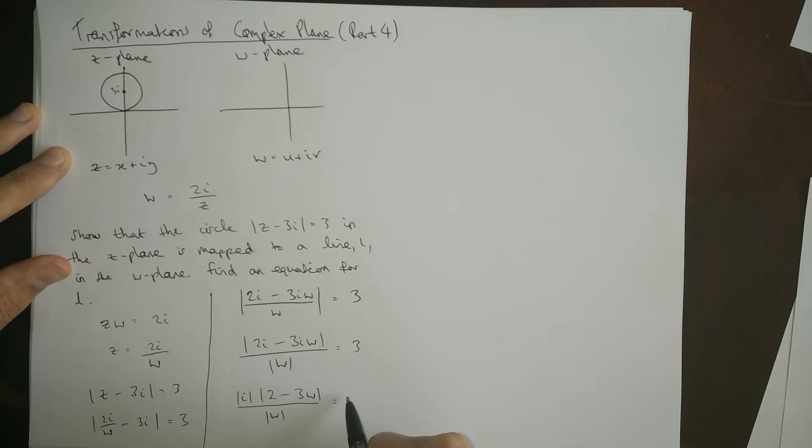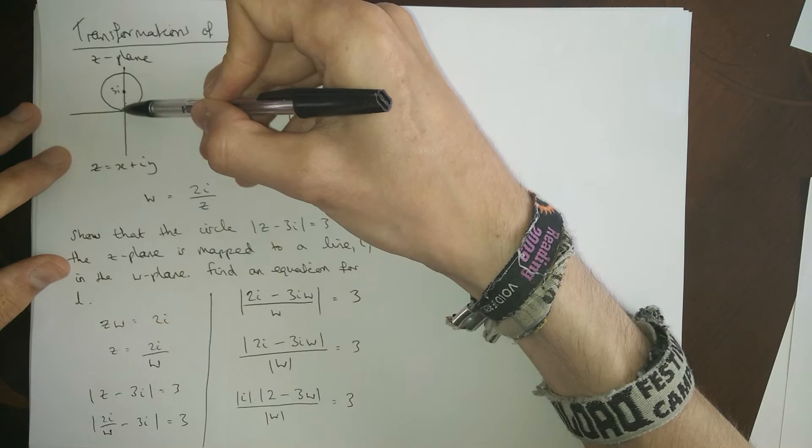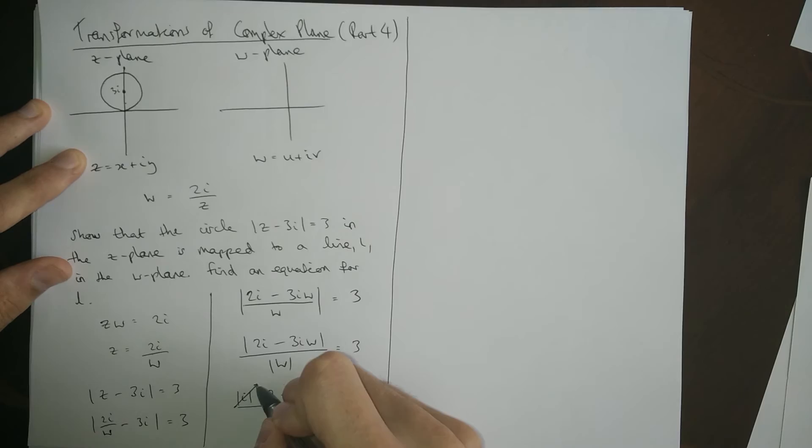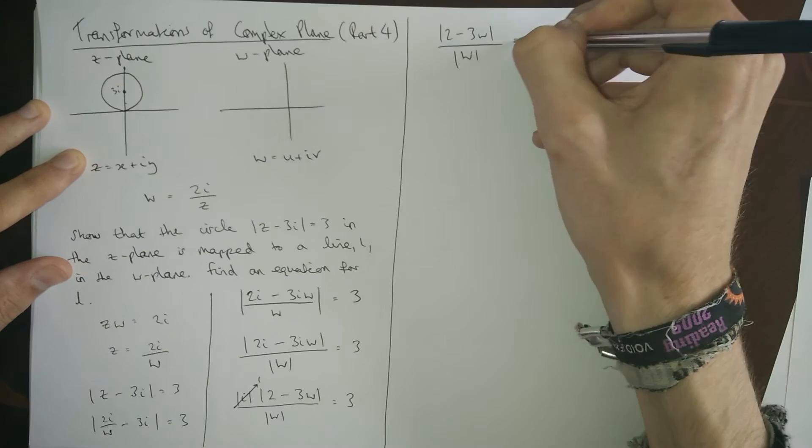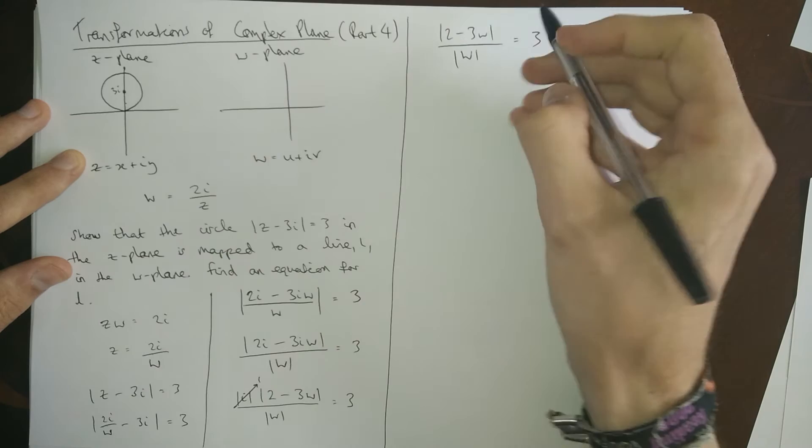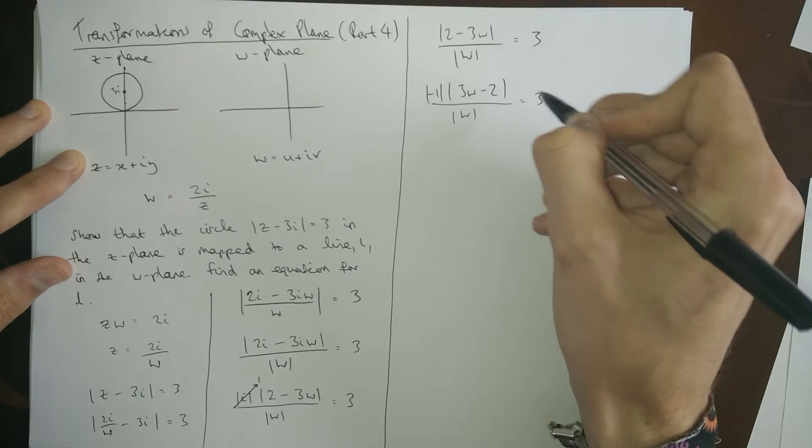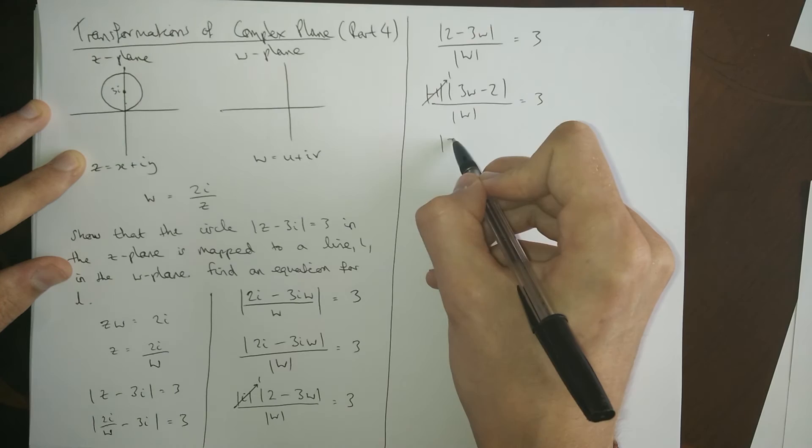Now, this is where I rely on you guys knowing what the modulus of i is. Well, i is just here, isn't it? And it's got a length of 1, so its modulus is 1. So, actually, this i can get rid of it. You can do the same thing for negative numbers as well. In fact, we'll do that just to show that. So, we get rid of this as being 1. And we're left with 2 minus 3W over W equals 3. In fact, we could do a swap of sign here. So, we could take our negative number out as a factor. And that would make this 3W minus 2. So, times by minus 1, you get minus 3 and plus 2. And the length of minus 1 is also 1, right? Minus 1 is length 1. So, we've got this.